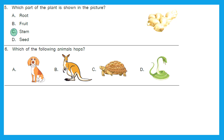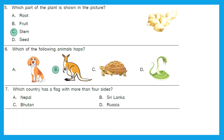The answer is B — kangaroo. Question 7: Which country has a flag with more than four sides? Can you guess? This flag has five sides — that is more than four sides. Is it Nepal's, Sri Lanka's, Bhutan's, or Russia's? It's Nepal. Nepal's flag has five sides, so option A is the right answer.